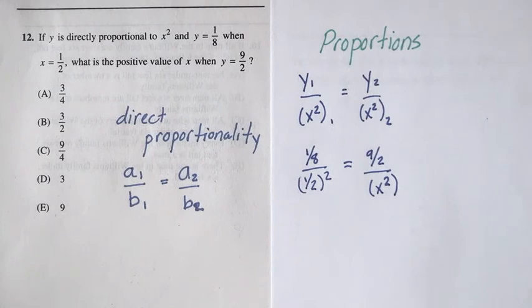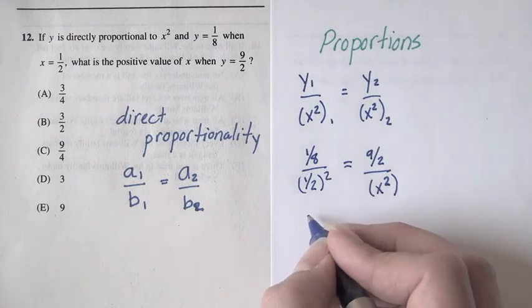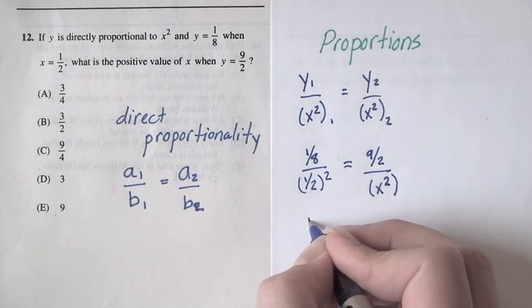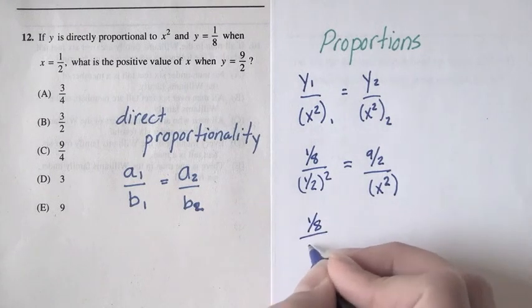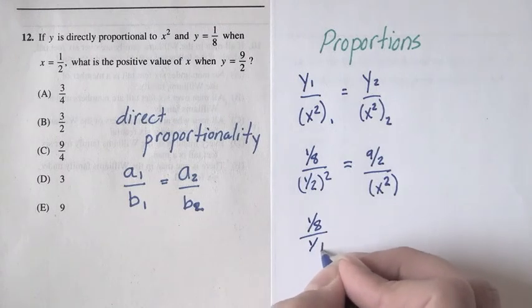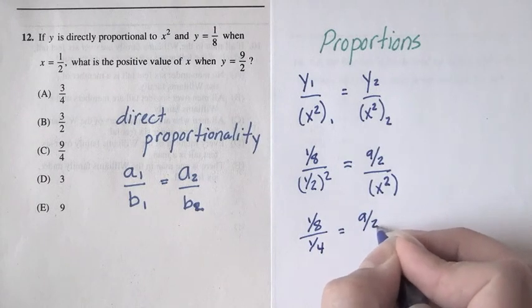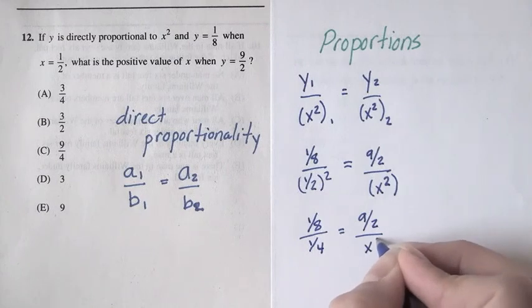Now we're ready to solve for x. This involves a lot of fractions, so this part can be tricky too. Let's first start by simplifying this one over here. One-eighth over one-half squared is one-fourth, and that's equal to nine-halves over x squared.